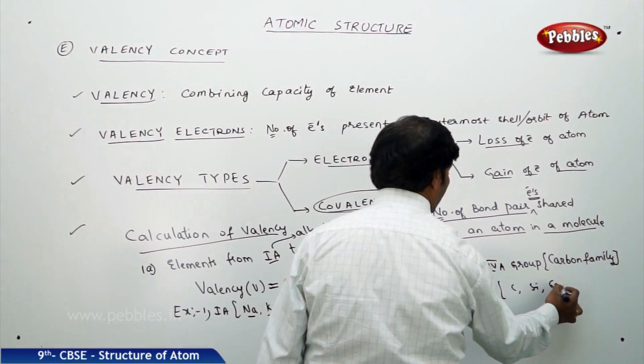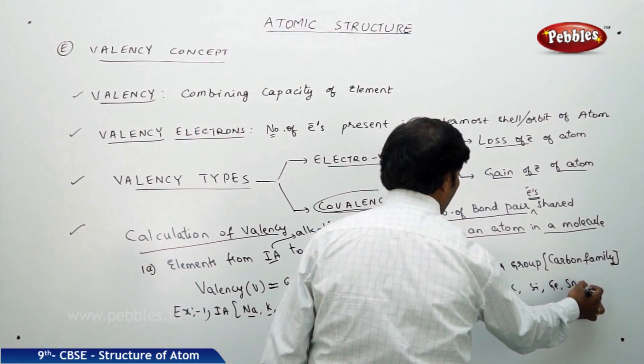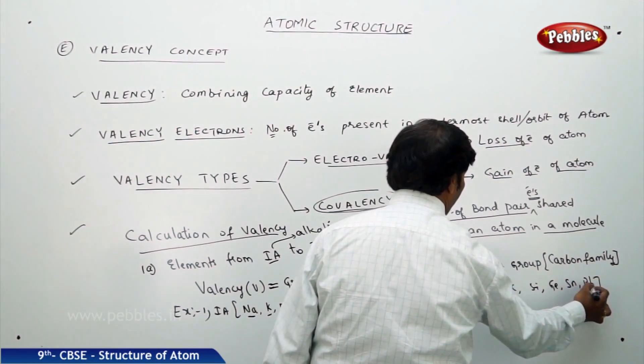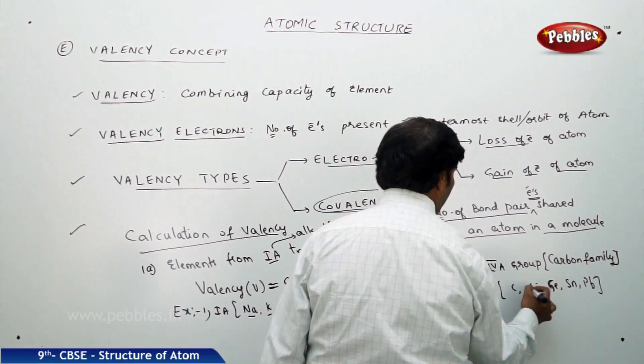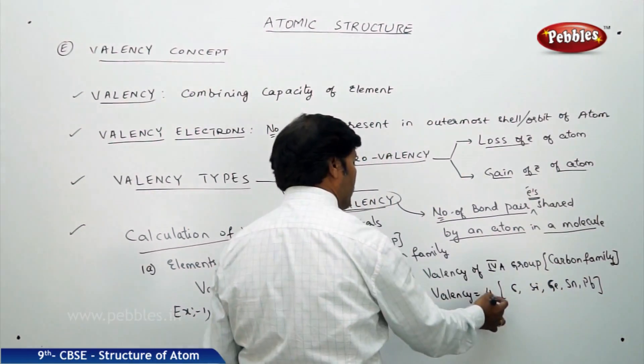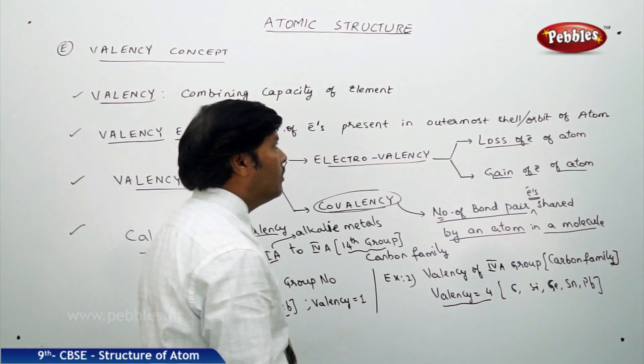That is because if you take carbon, silicon, germanium, tin and lead, these are all the elements which are belonging to the carbon family, 14th group. In all these elements you find that the number of valence electrons are 4. So its valency is equal to 4.